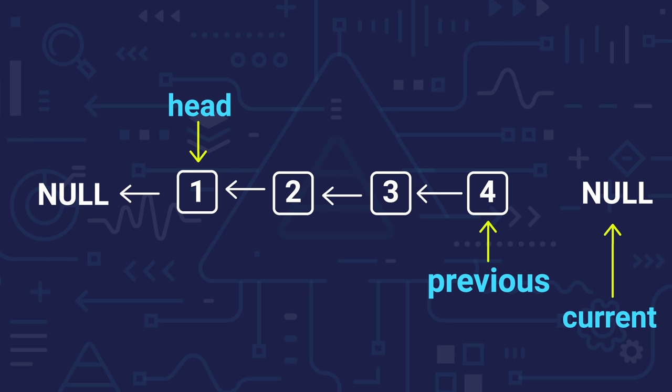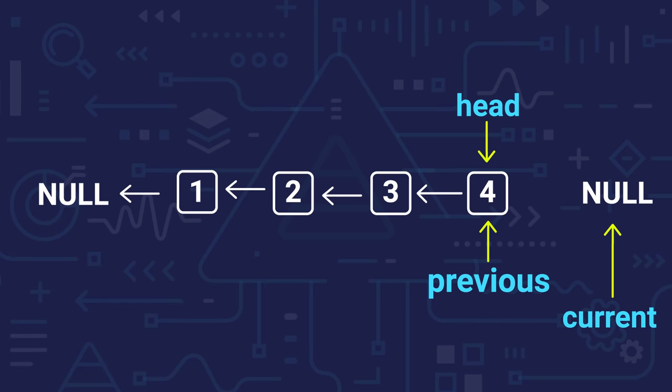Now, since current is null, I know I will break my loop here because the linked list has been reversed. The new head will be given through the previous pointer. So my linked list will be reversed.